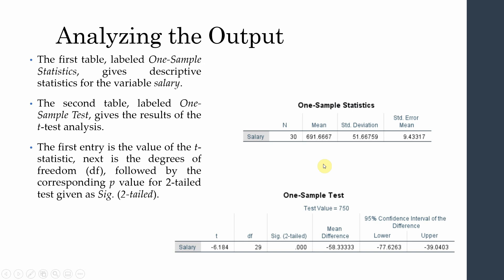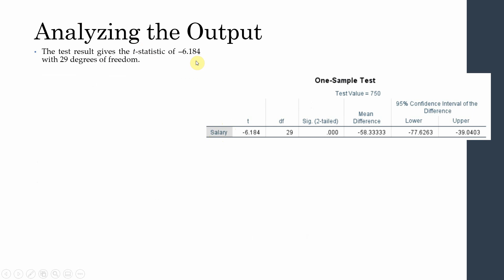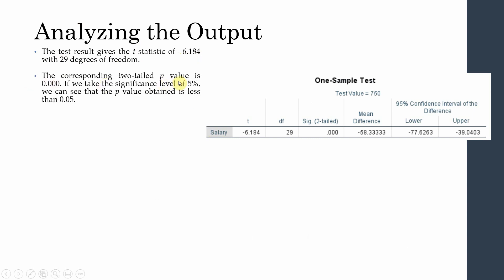Significant differences mean the business school's claim may be wrong — but is it actually wrong? We must look at the mean value to determine whether it is lower or higher than the claimed value. The t-statistic is −6.184 with 29 degrees of freedom, and the two-tailed p-value is 0.000. The mean salary of 691.67 is lower than the claimed 750.